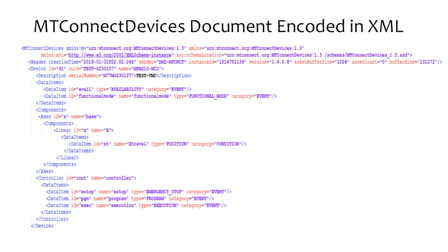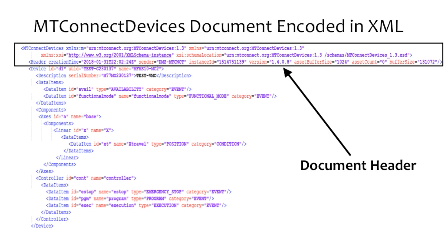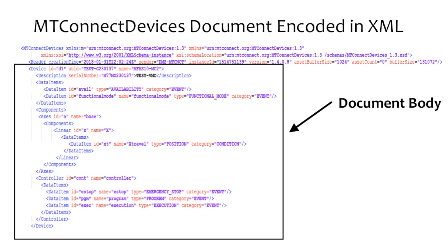XML represents information in a structured text format. The topmost portion of the document is called the document header, which contains two types of information: information used by a client software application to properly interpret the contents of the document, and additional information that a client software application needs to know about the MT-Connect agent so that it can make successive requests for information. The document body contains the information a client software application needs to know about a piece of equipment and the data to be reported by that equipment. The client software application uses this information to fully interpret data published by the equipment so that it has the same context and meaning that the data represents on the shop floor.